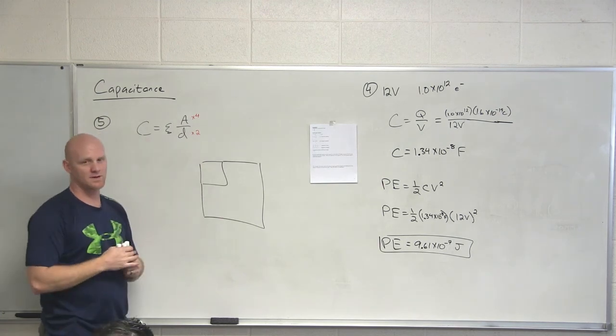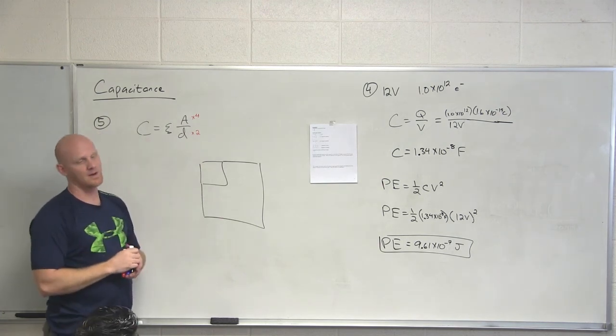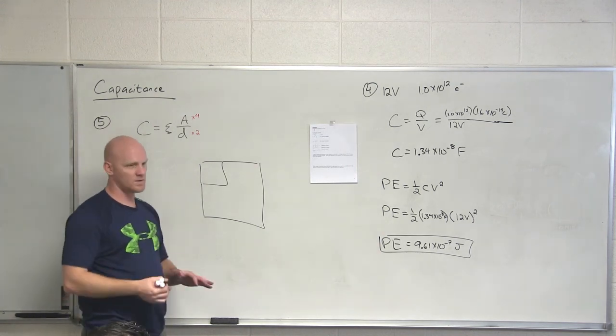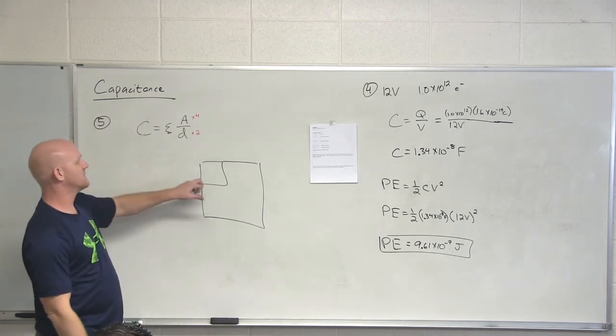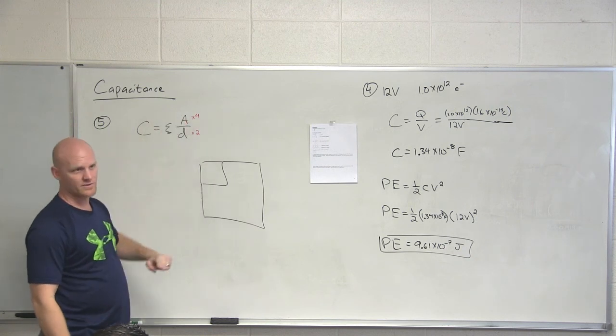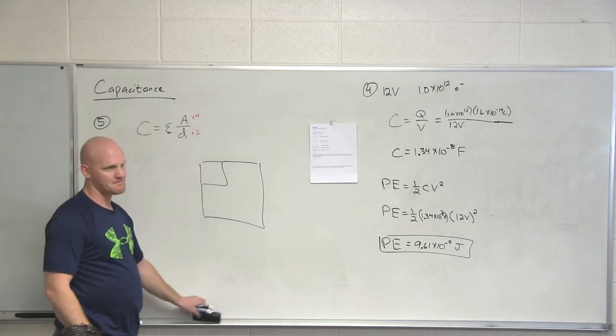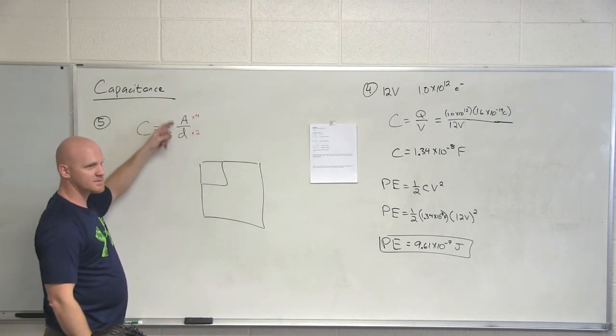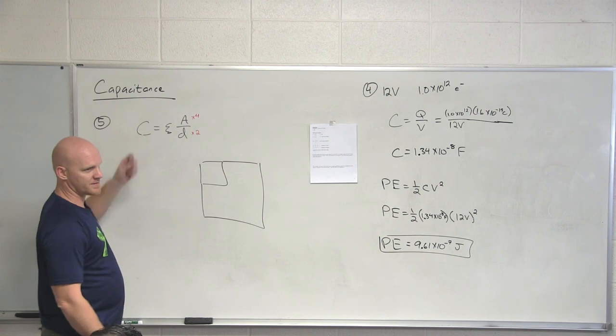So now we've realized that I've quadrupled the area and doubled the distance of separation. What have I really done to the capacitance here for this capacitor? I've doubled it overall. Good. So like I said, just totally a conceptual question. Just realize it's area here, not just necessarily the length of sides or something like that. So overall, we double the capacitance. Quadrupled the area, I doubled the distance, so overall net doubling of the capacitance.